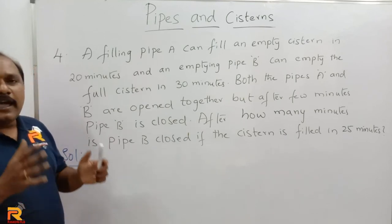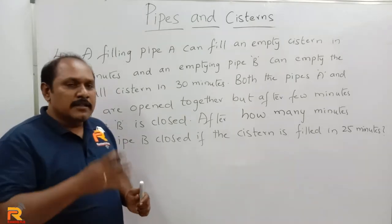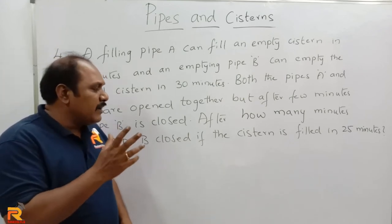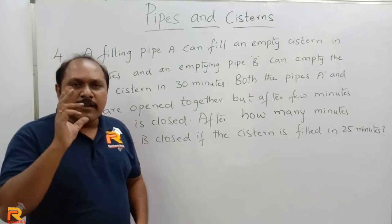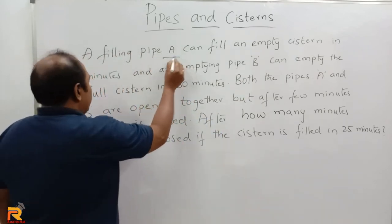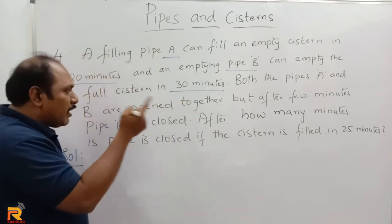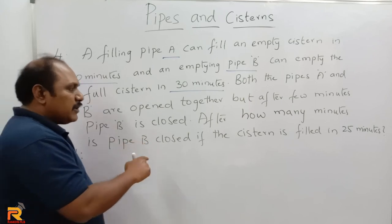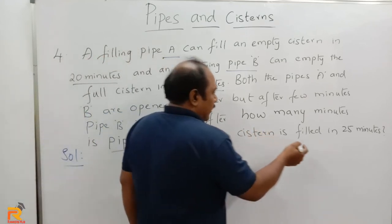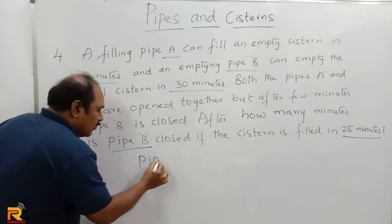A filling pipe A can fill an empty system in 20 minutes, and an emptying pipe B can empty the same full system in 30 minutes. Both pipes A and B are opened together, but after few minutes pipe B is closed. After how many minutes is pipe B closed, if the system is filled in 25 minutes? Let us answer it using LCM. The LCM of 20 and 30 is 60.